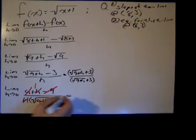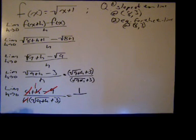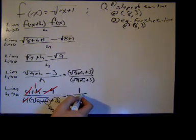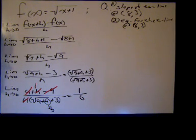Well, the limit as h goes to 0. The numerator is 1. The denominator, h, is going to 0. So we have the square root of 9, which is 3, plus 3. 3+3 is 6. So there's the slope of the tangent line at the point (8, 3).